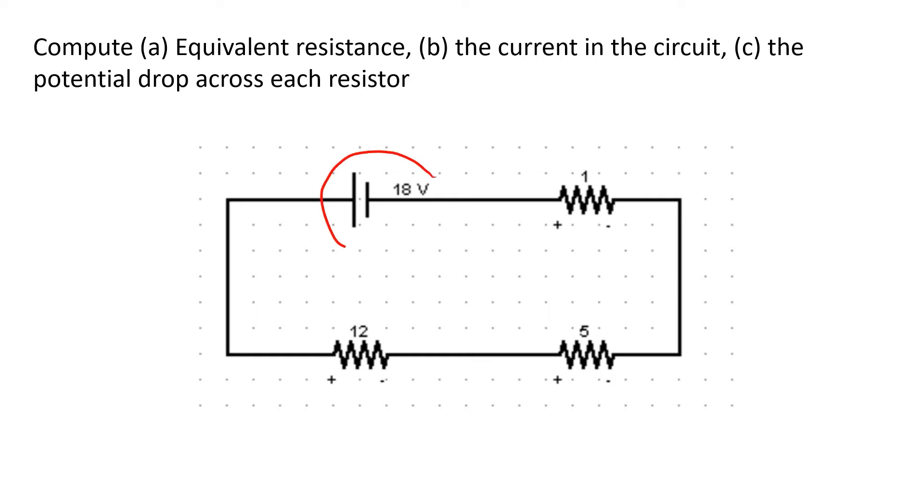We have here a voltage source given the value of 18 volts, then we have three resistors. Let's say this is R1, this is R2, then this is R3. R1 has a value of 12 ohms, R2 has a value of 5 ohms, and R3 is just 1 ohm.